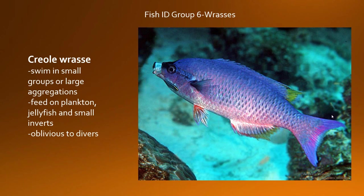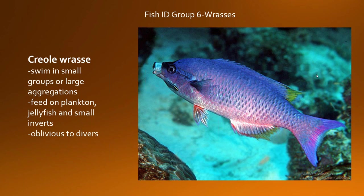The creole wrasse is distinguished by its very small mouth and purple or indigo forebody. These will often visit cleaning stations where fish and shrimp pick parasites off of them. You'll often see them in really large aggregations — there is never just one creole wrasse. They will pick plankton from the water column as well as other small invertebrates, but they can't eat anything very big because of their very specialized, adapted mouth. You will see these fish in large numbers, pretty unmistakable due to that coloration.